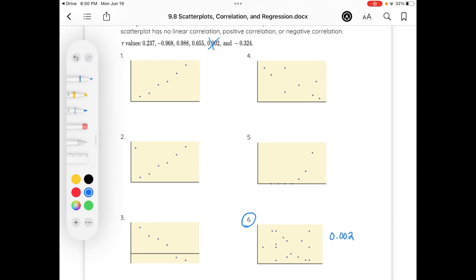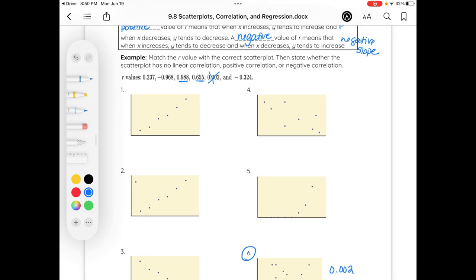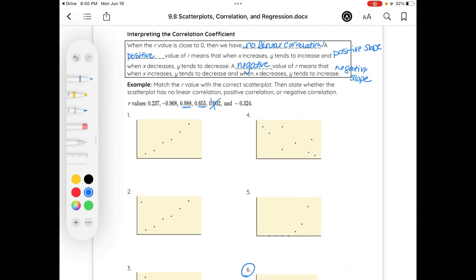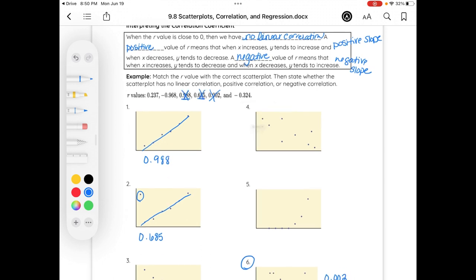Then I'm going to go to my positive r values. I have two positive ones. The closer it is to one, the stronger the relationship. So as I compare these two, yes, they're both positive, but because number two has this outlier that is in fact pulling that line of best fit, I'm going to assign 685 thousandths as my r value to number two because of that outlier. And then I'll assign the stronger positive r value to the stronger of the two.